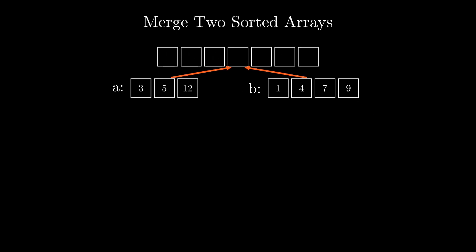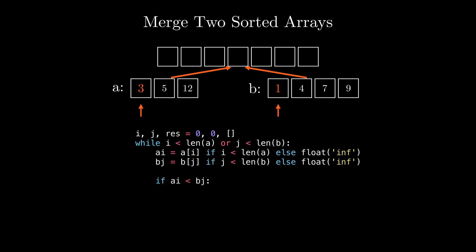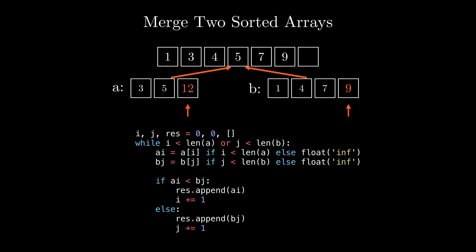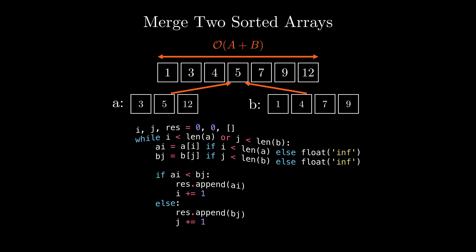The implementation follows exactly the steps we just described. We initialize two pointers to the first elements of the arrays and the resulting array to be empty. As long as there are elements to process in any of the arrays, we iterate. We store the value of the first array if the pointer is within bounds; otherwise we set it to infinity. Similarly for the second array. We then compare the values: if the first is smaller, we add it to the result and increment the first pointer; otherwise we add the second value and increment the second pointer. Because each element is added to the result exactly once, the whole procedure takes O(A + B) time, where A is the size of the first array and B is the size of the second, making the merging algorithm highly efficient.